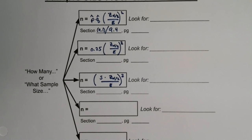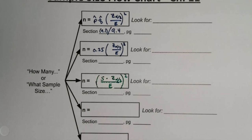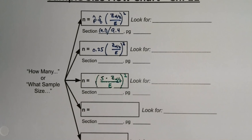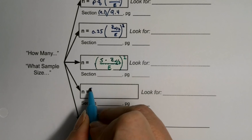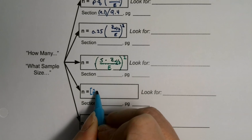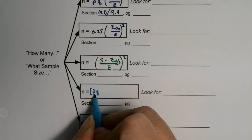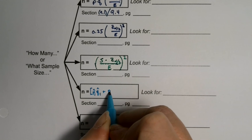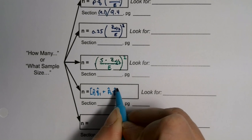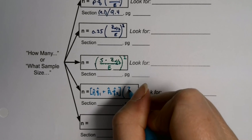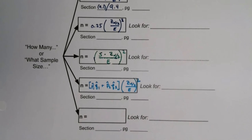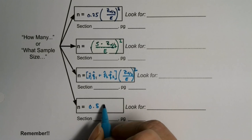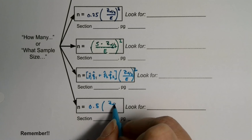I'll do that formula in a different color — green. The bottom two I'll do in a different color as well because they are more complicated. So: P1-hat times Q1-hat plus P2-hat times Q2-hat, times Z alpha over 2 over the error squared — that's a big one. Then the last one, which is not nearly as bad. You'll notice a theme: we keep doing this Z alpha over 2 over the error squared.